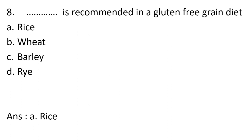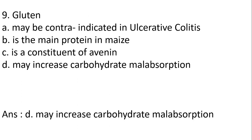MCQ 9: Gluten may be contraindicated in which condition — ulcerative colitis, is the main protein in maize, is a constituent of avenin, or may increase carbohydrate malabsorption? Answer: D, may increase carbohydrate malabsorption.